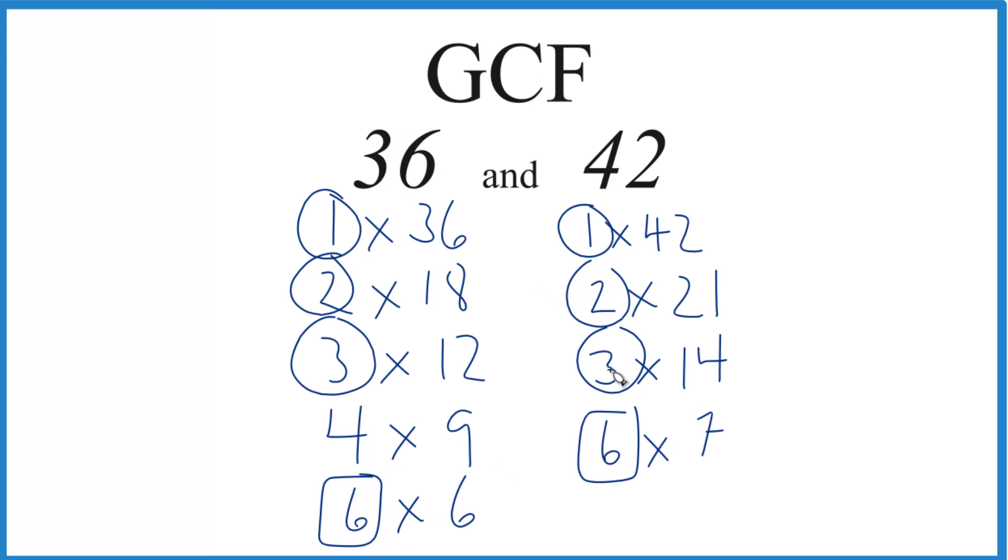That's the number that goes into 36 and 42 evenly, the greatest one. So the GCF for 36 and 42 is 6. There are other ways you can do this, like prime factorization, but unless you have a big number, this works pretty well.